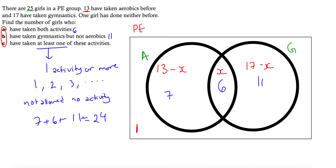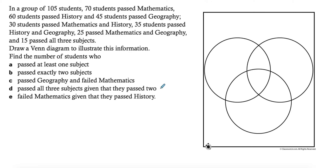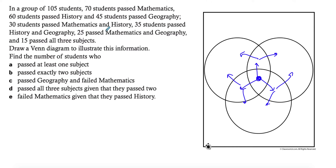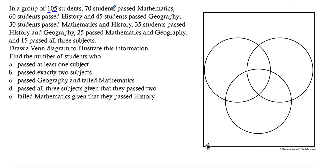Those are the two-set cases. You can expand the same idea for three sets. I'm going to work through a simple three-set example where the intersection is given, but the same concept applies if it's not given. For three sets, you always start with the center — the triple intersection — then move outward to the double intersections, and finally to the individual circles. A group of 105 students is the total.